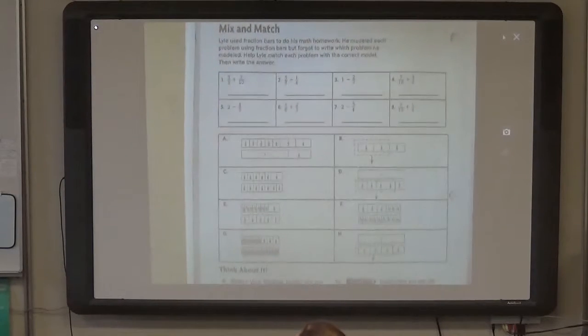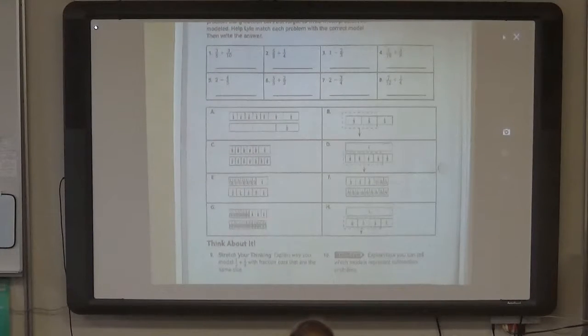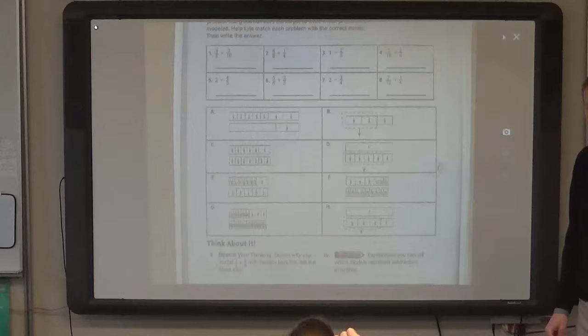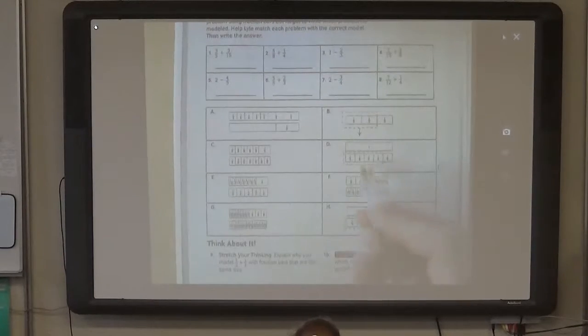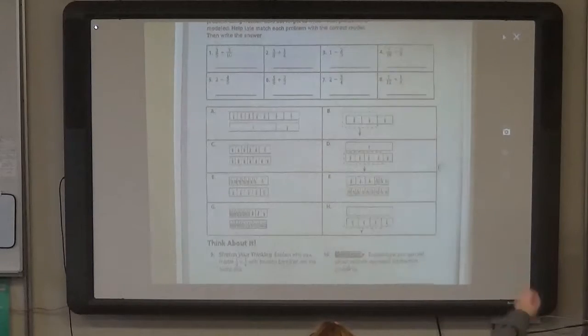Look at this first one. Three-fifths and three-tenths. If we were to draw out three-fifths using these models, which one might represent three-fifths? Or which model could we use to find three-fifths? Andrew? D. Okay, this one is in fifths, but this one is highlighted four-fifths. So you're close. There must be another one that has three-fifths in it. Do you see another one with three-fifths? F. F has three-fifths. Here it is. One, two, three.